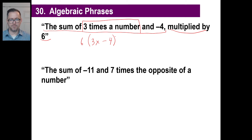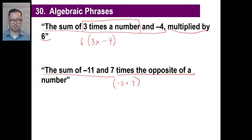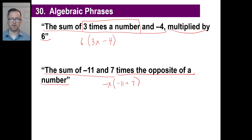The sum of negative 11 and seven times the opposite of a number. We have negative 11 plus 7, and all of that is going to be multiplied by the opposite of a number. If the whole thing were multiplied by a number, that would be X. Since it's the opposite of a number, it's multiplied by negative X. So: (negative 11 + 7)(−X).